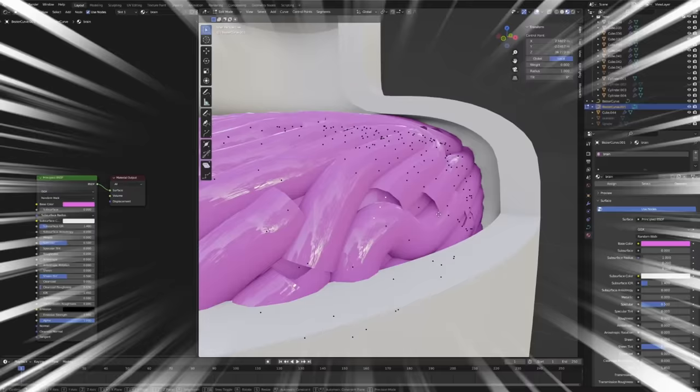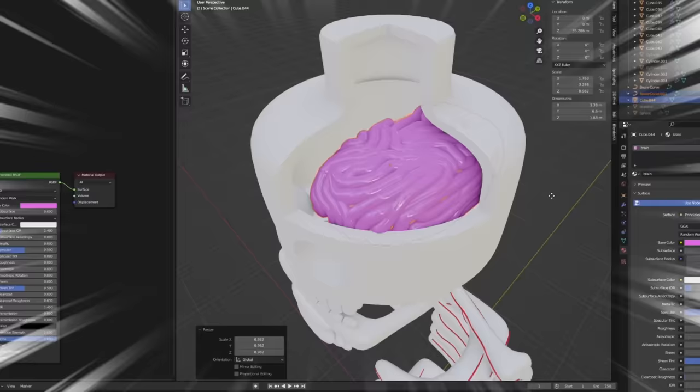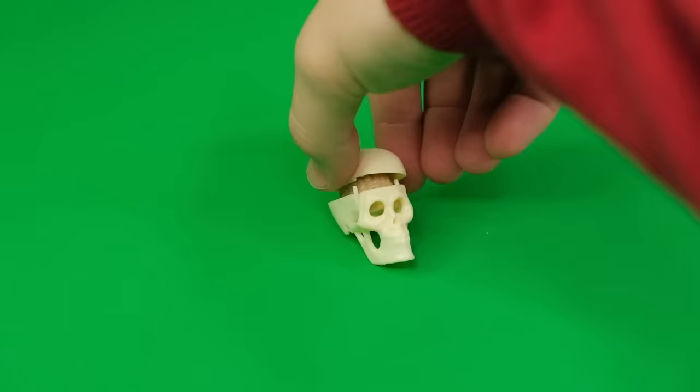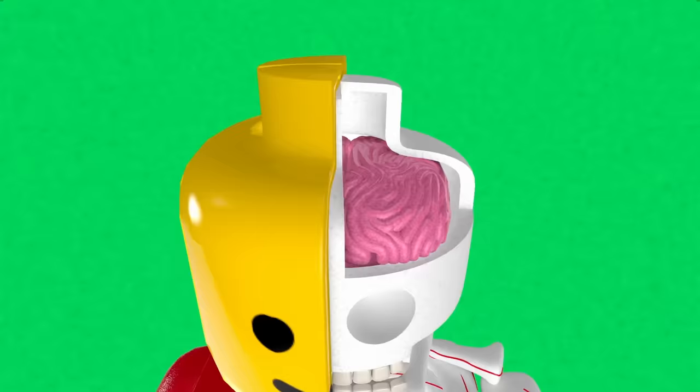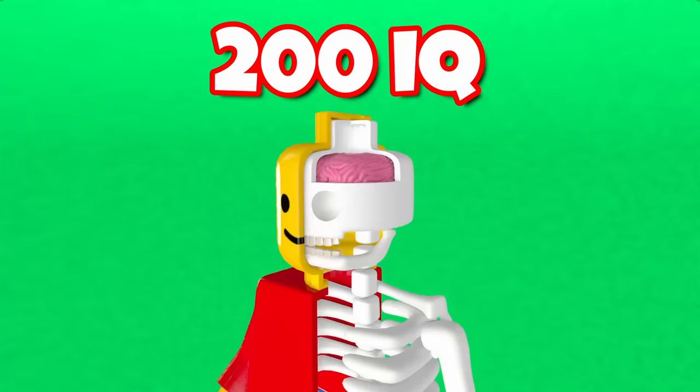But I bet it doesn't taste as nice. Then after some final adjustments, I copied the brain half to the other side. Because brains have two sides. And now our boy can finally have a high IQ. Bro is a literal genius.